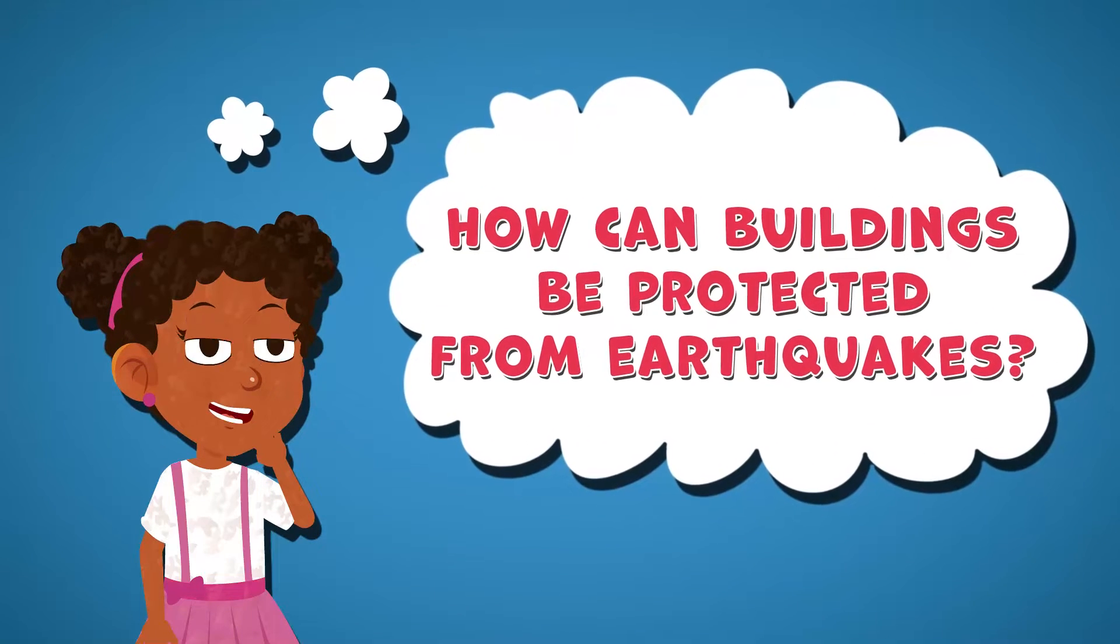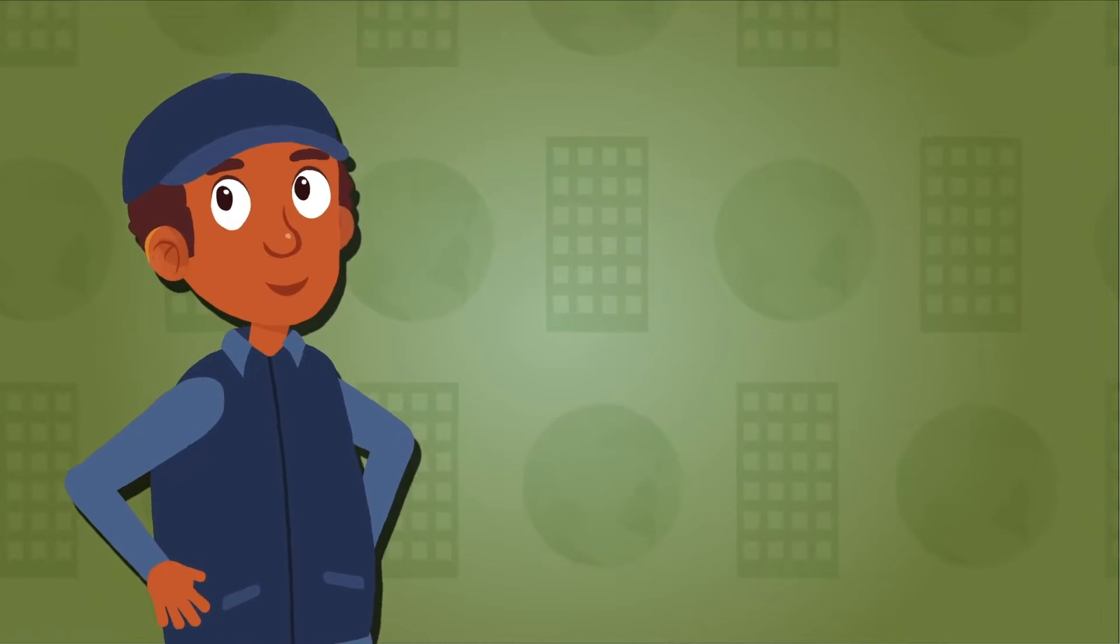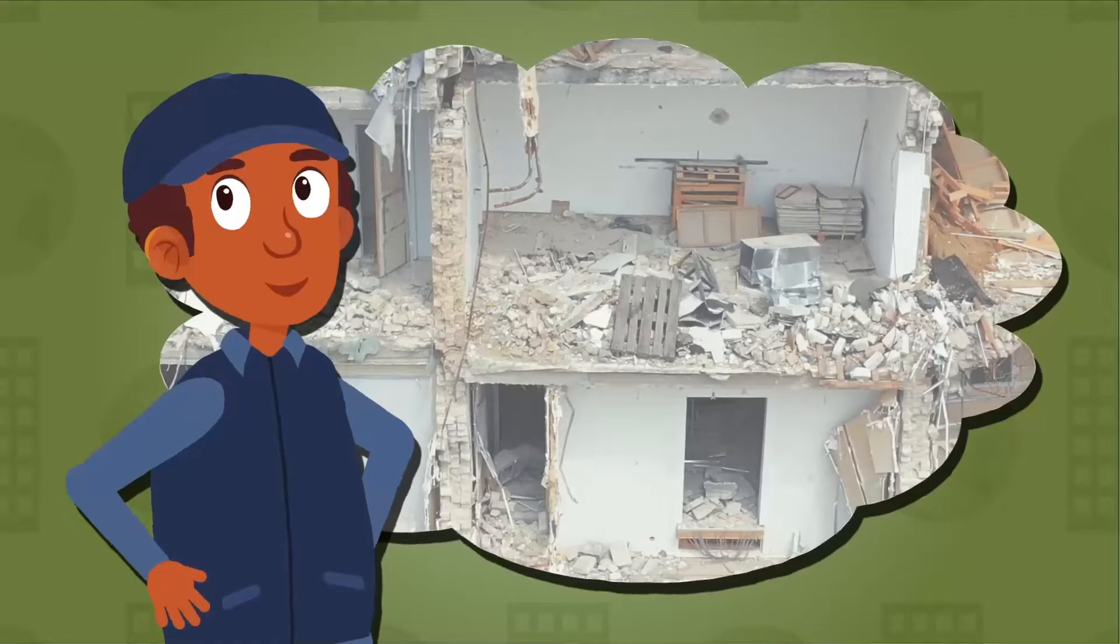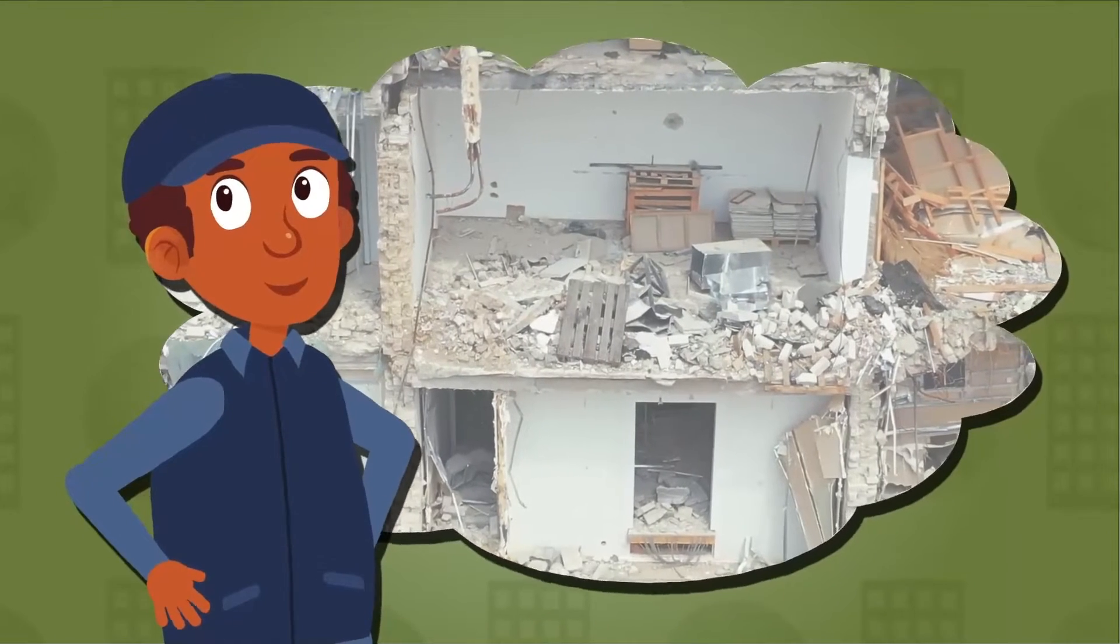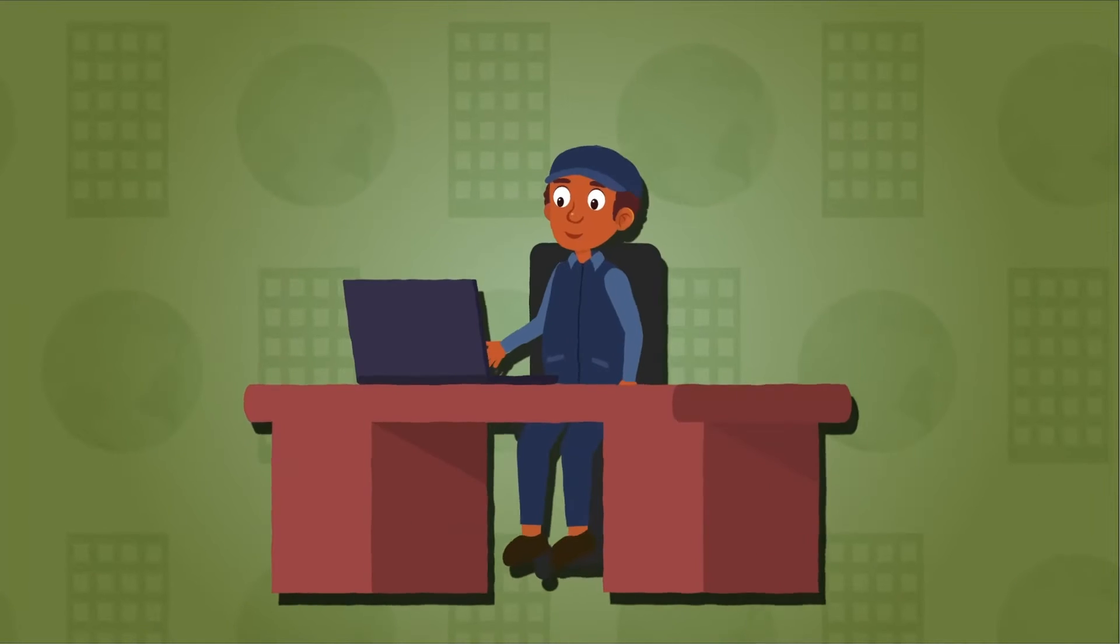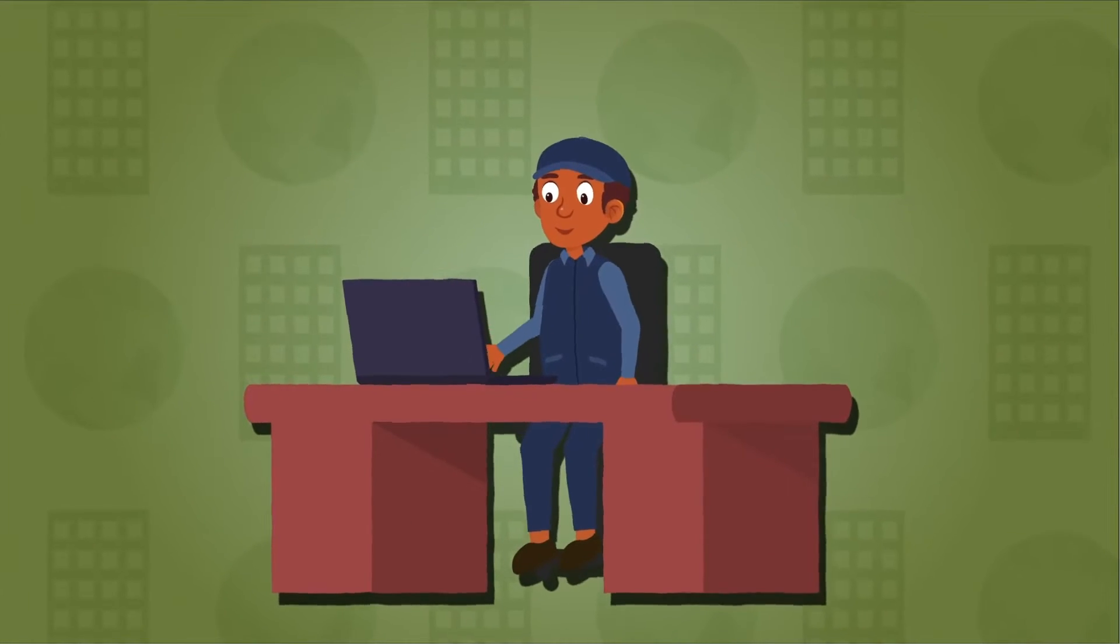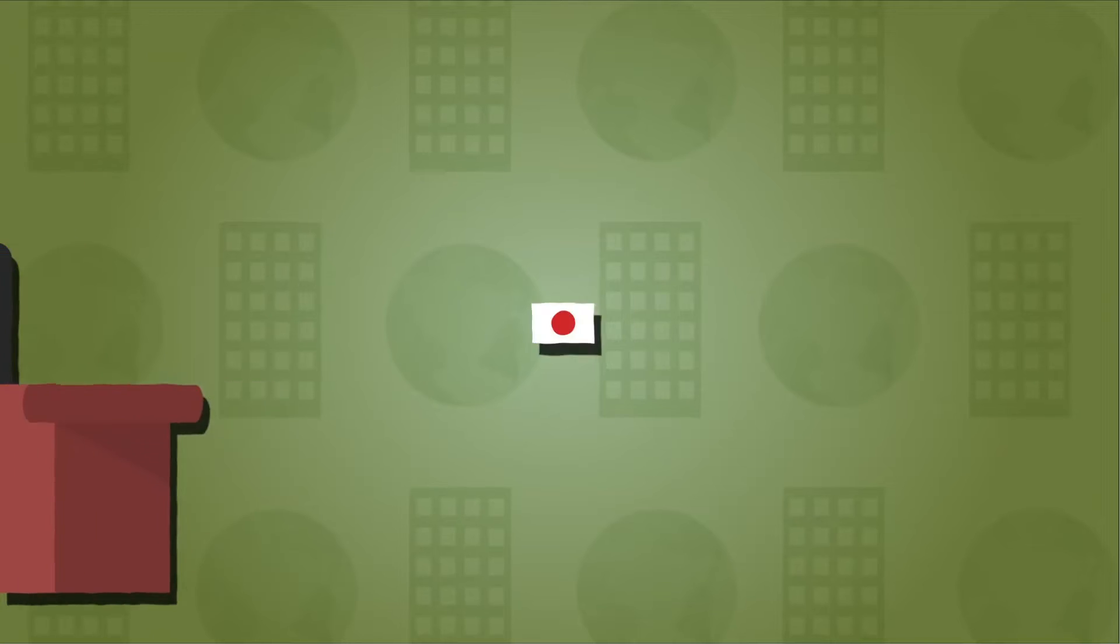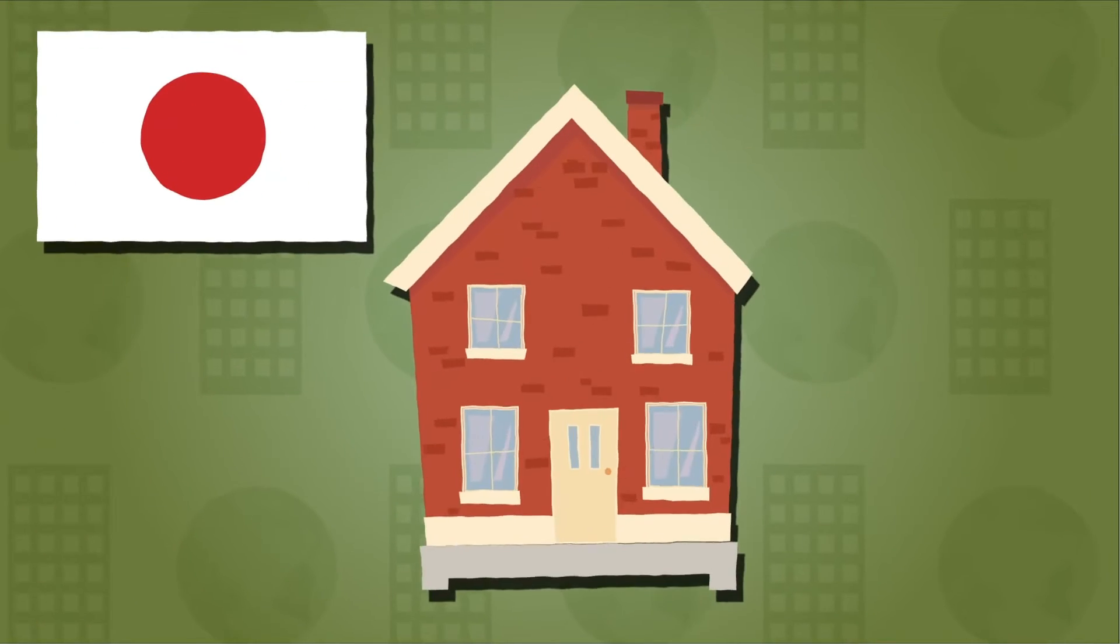Hmm, I wonder... Engineers that make buildings have to think about how to save them from being destroyed by earthquakes. They have spent years and years coming up with new ways to protect buildings. Japanese engineers have designed a new technology that lifts the building up on a cushion of air to protect it from the earthquake.